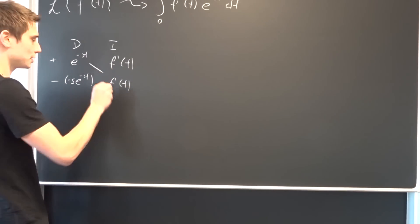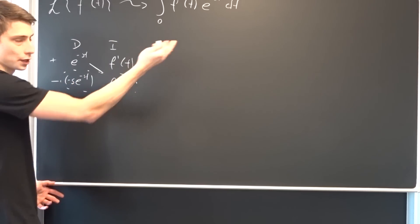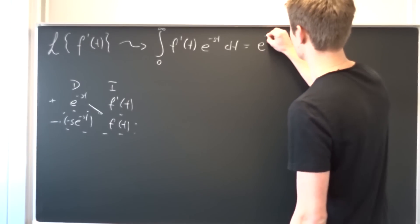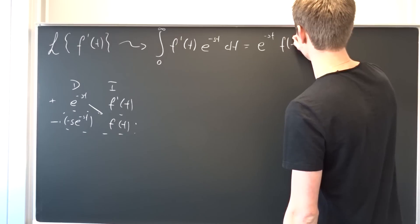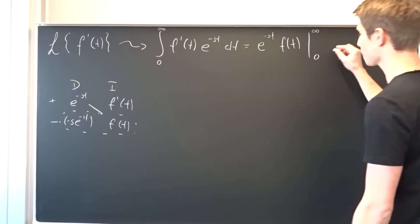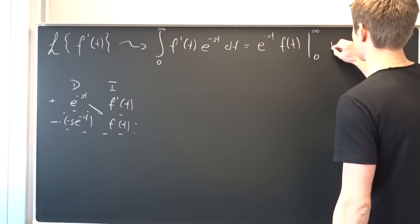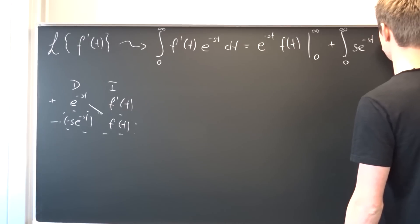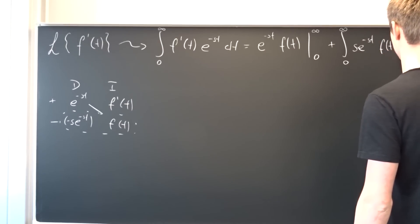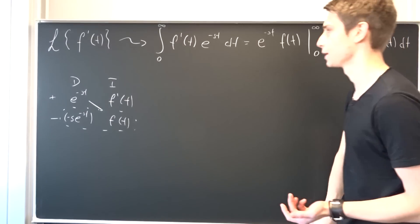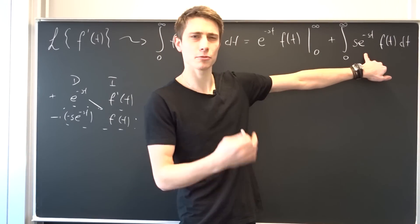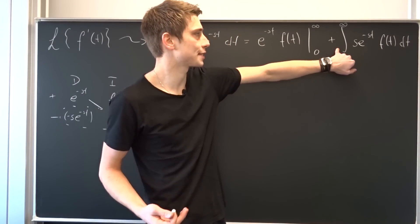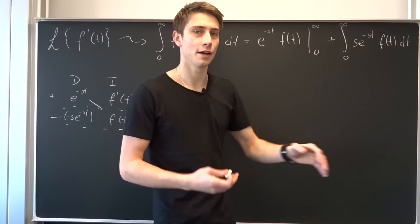Now we multiply those together and write the remaining integral next to it. So this is equal to e to the minus st times f of t evaluated from zero to infinity, plus the improper integral from zero to infinity of s times e to the minus st times f of t times dt. This integral looks familiar — using linearity we bring the s outside, and this integral is just capital F of s.